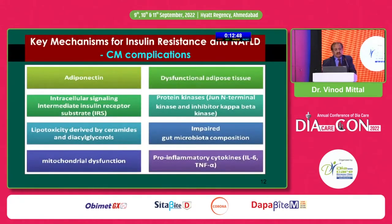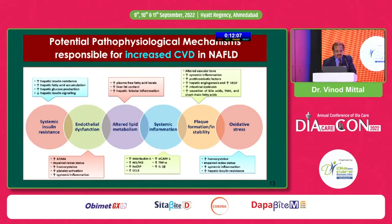Different mechanisms lead to complications in NAFLD: decreased adiponectin, lipotoxicity, decreased insulin receptor substrate, mitochondrial dysfunction, and adipose tissue dysfunction. When we have an increase in weight, there is increased lipogenesis — increase in the number of adipocytes. When we take calorie-dense diet, there is also an increase in the size of adipocytes, and this increase in size leads to inflammation and release of adipocytokines. Multiple mechanisms lead to cardiovascular disease: systemic insulin resistance, endothelial dysfunction, altered lipid metabolism, systemic inflammation, plaque instability, increased PAI-1, and oxidative stress. A multi-factorial approach — lifestyle along with treating NAFLD and all other cardiovascular risk factors — is required.